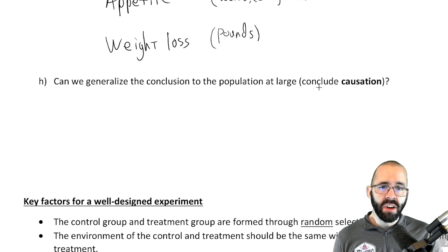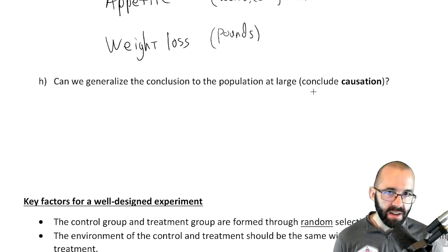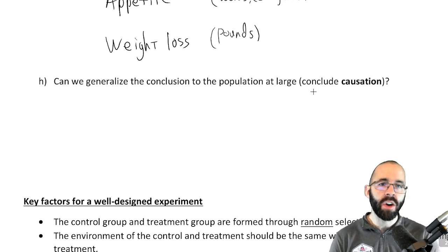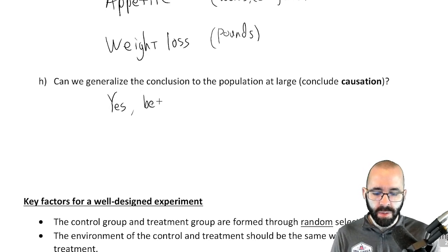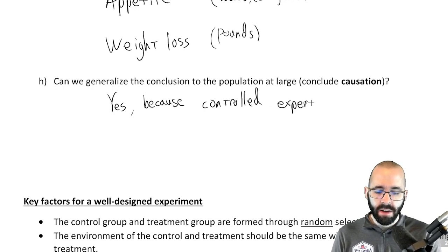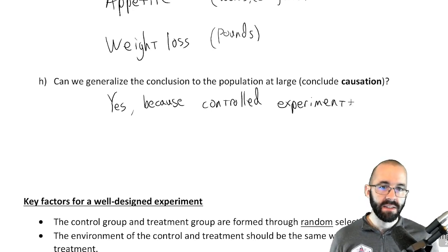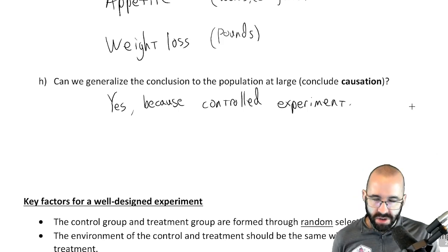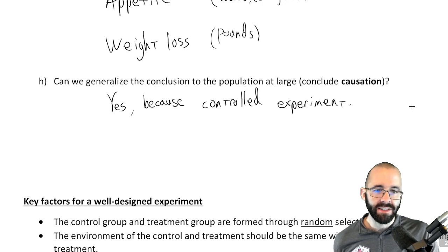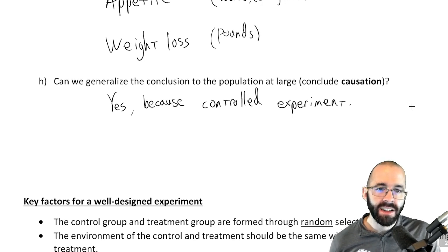Can we generalize the conclusion to the population at large? Yes, as long as the experiment was done well, we have a big enough sample size, and we're following the requirements from Unit 8. Because it's a controlled experiment, yes — in general, if the experiment was done well and it was reproducible, we'd conclude there's no evidence to suggest chia seeds help with weight loss.